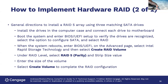General directions to install a RAID 5 array using three matching SATA drives: install the drives in the computer case and connect each to the motherboard. Boot the system and enter BIOS/UEFI to verify the drives are recognized. Select the option to configure SATA and select RAID. When the system reboots, enter BIOS/UEFI on the advanced page, select Intel Rapid Storage Technology, then create RAID volume. Under RAID level, choose RAID 5, set the stripe size, enter the volume size, and select 'Create Volume' to complete the configuration.